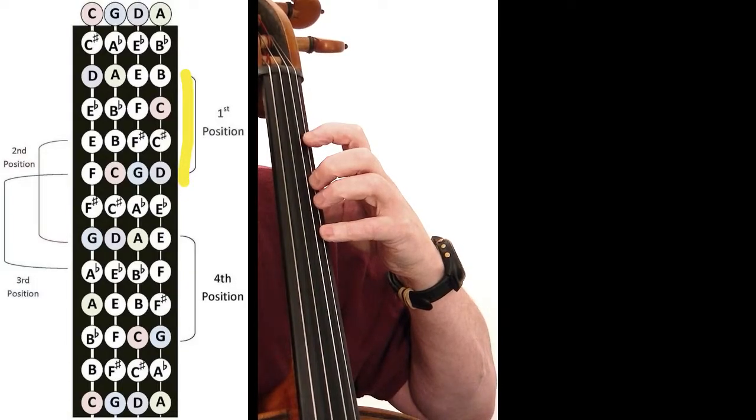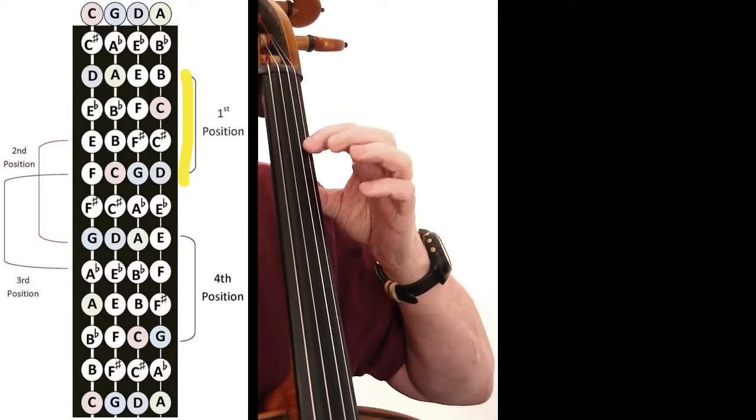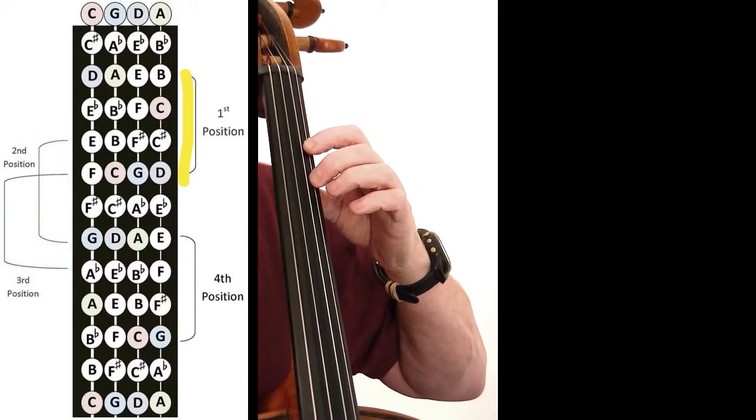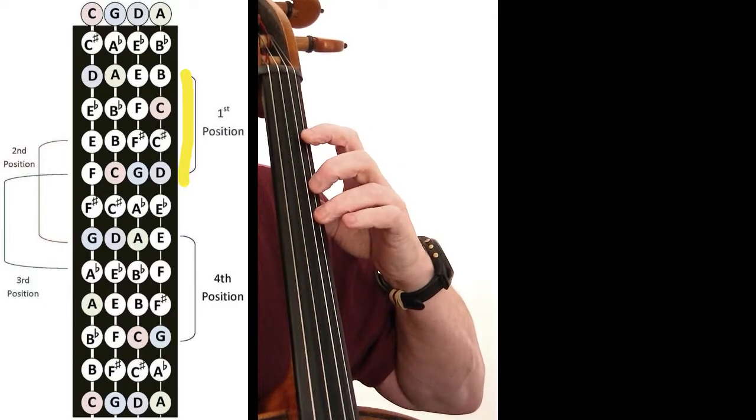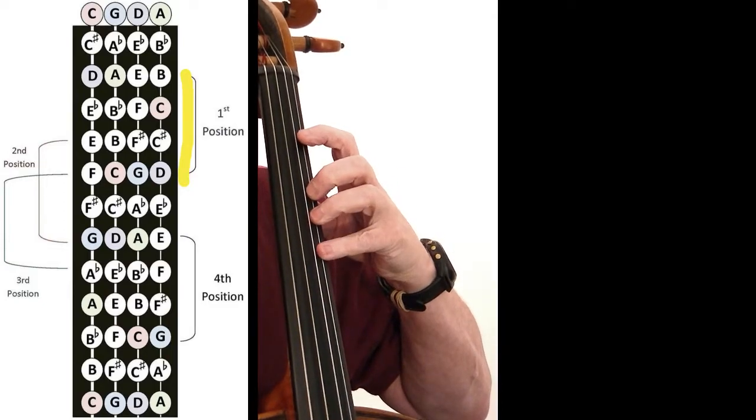Let's start by looking at first position. That's where pretty much all of us begin our cello studies. Okay, here we are on the A string and in first position, as we said. So first finger will be on B natural, the second finger on C natural, the third finger is on C sharp, fourth finger on D.